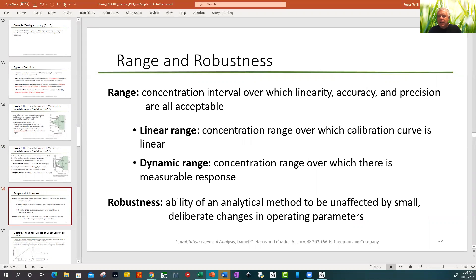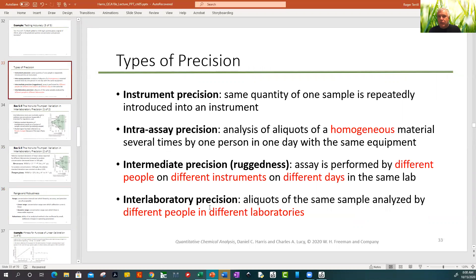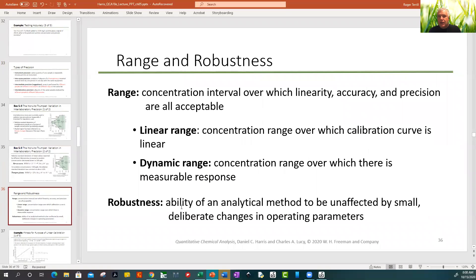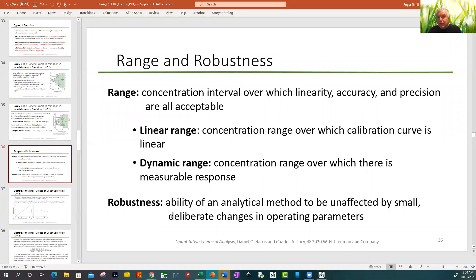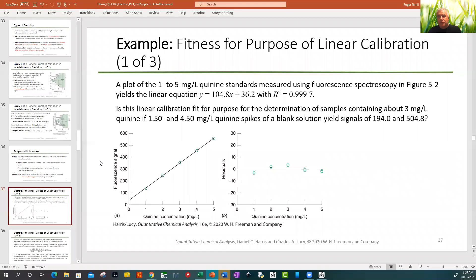Range, not that you know these. Linear range, dynamic range. Linear dynamic range is the linear range where there's a measurable response. The robustness, this is the ability to deal with inter-laboratory precision. And basically small deliberate changes, right? I think that's something to remember there. I'm flying through this. Trust me, we're gonna slow down.